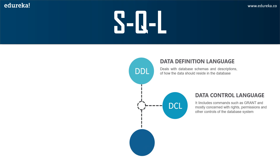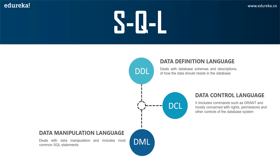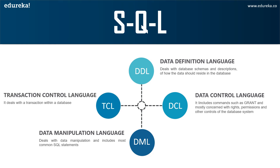The next command is DML, that is Data Manipulation Language. It allows you to access and manipulate data — inserting, updating, deleting, and retrieving data from the database. The INSERT command is used to insert data into the table, UPDATE is used to update existing data within the table, and DELETE is used to delete records from the database. The final command is TCL, that is Transaction Control Language, which allows you to deal with transactions. TCL commands include COMMIT, ROLLBACK, SAVEPOINT, and SET TRANSACTION.